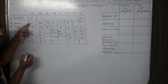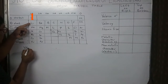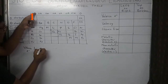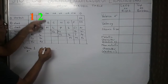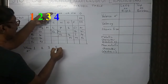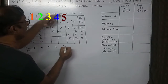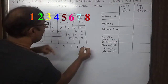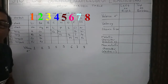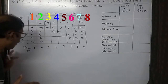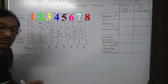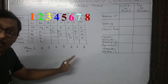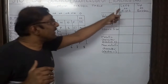In the second period, lithium has one valence electron. Beryllium has two valence electrons, boron has three, carbon has four, nitrogen has five, oxygen has six, chlorine has seven, and neon has eight. The number of valence electrons goes on increasing as we go from left to right — one by one — so as we go from left to right, the valence electrons increase.